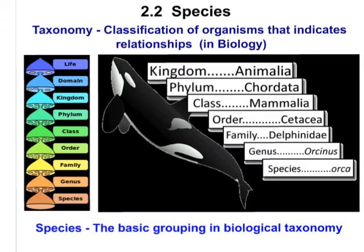First, let's start out with a really important word, and that is taxonomy. It sounds maybe complicated, but all it means is classification. And in biology, when we talk about taxonomy, we're specifically talking about the classification of organisms and taking into consideration the relationships between those organisms. Here is just a classification for a whale, looking at all of its relationships with other species and how closely it resembles those species in order to classify it. The species itself is the very basic grouping in biological taxonomy — the most basic, fundamental grouping is the species.